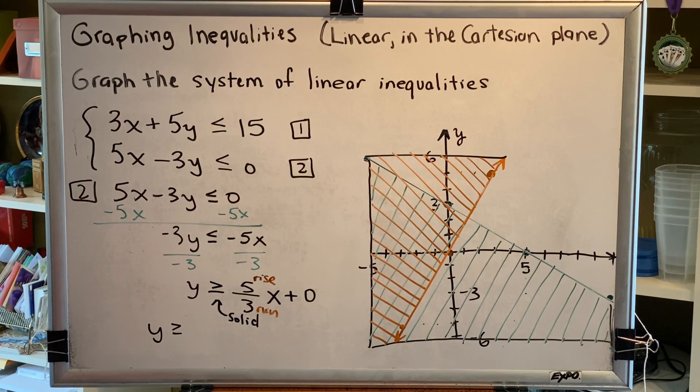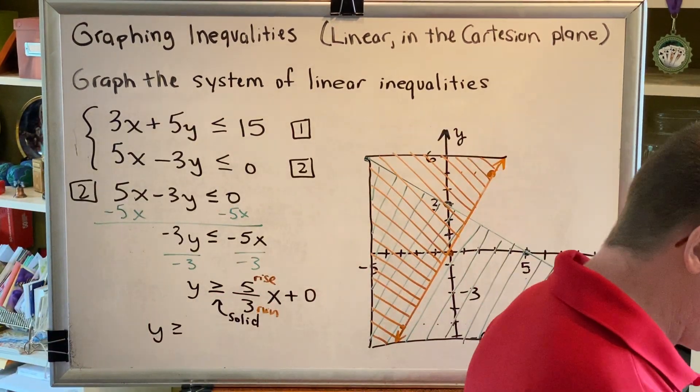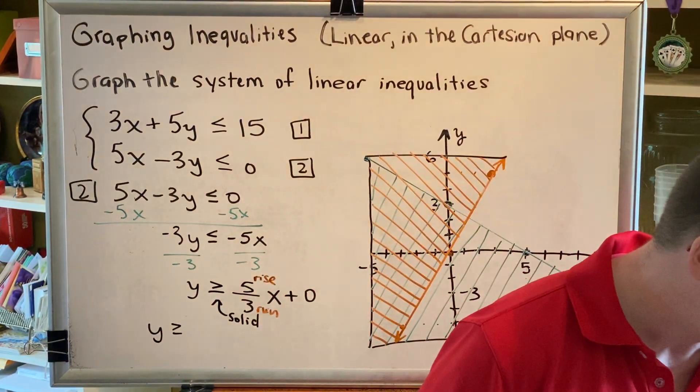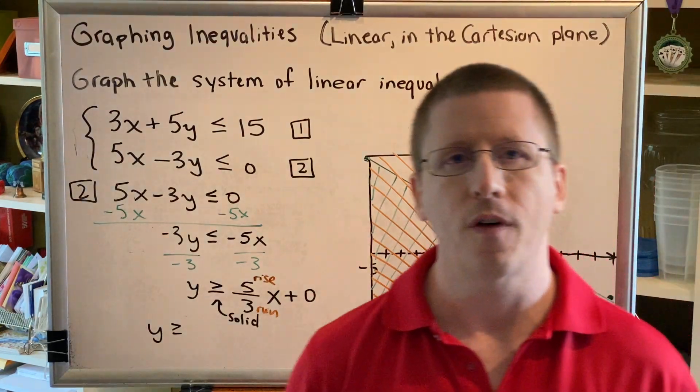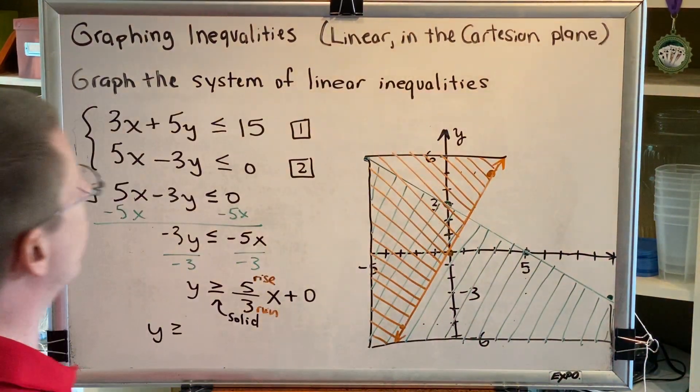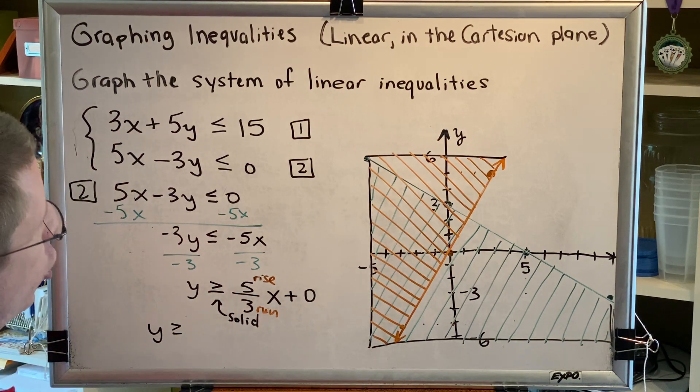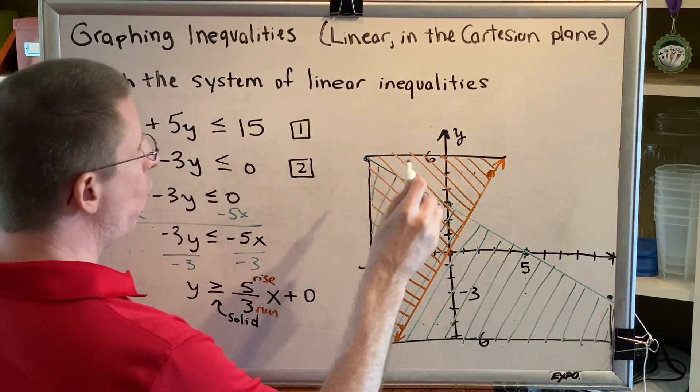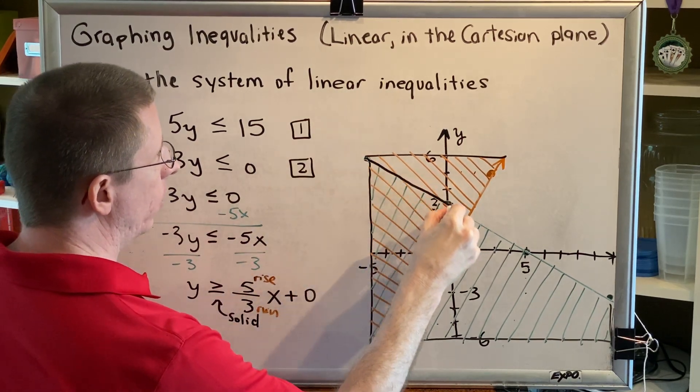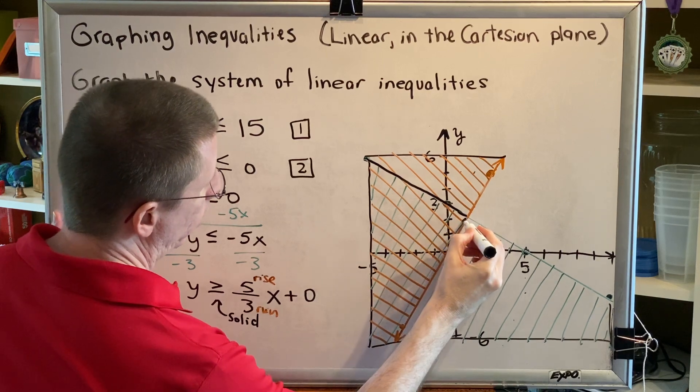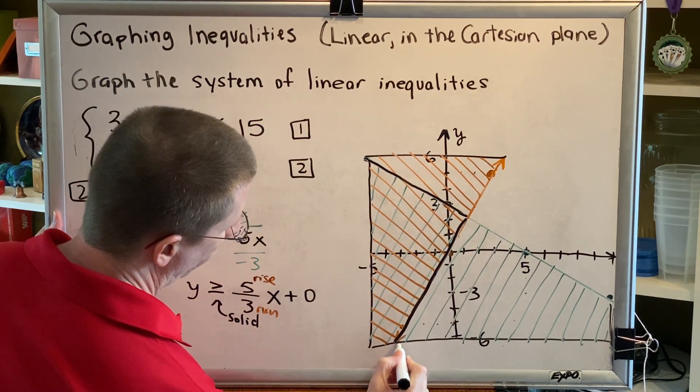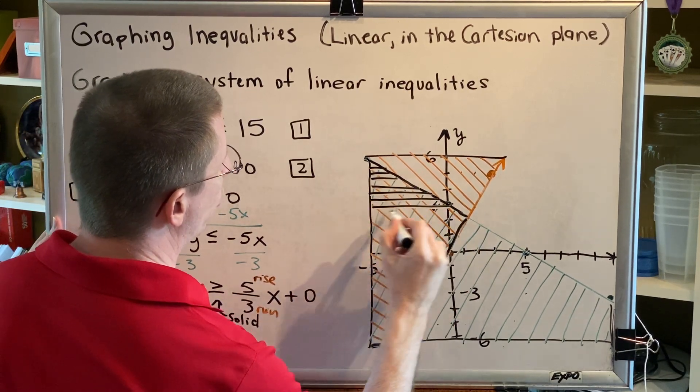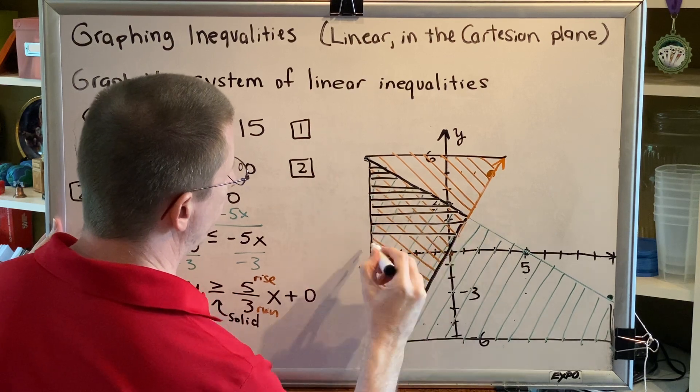I have now created two graphs of two inequalities on the same graph grid. I am now ready to solve this problem. We solve this problem by identifying the overlap of the shaded region. What part of the graph has both orange shading and green shading at the same time? This region is my final answer to this problem.